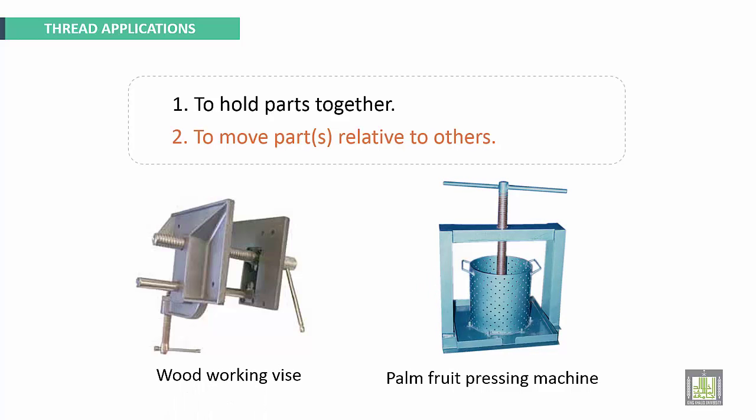Thread fastening is also used to move parts relative to others. Here we have two parts, for example part one. We use this thread to move that part. Examples include the woodworking vise and the palm fruit pressing machine, which also moves that part vertically.